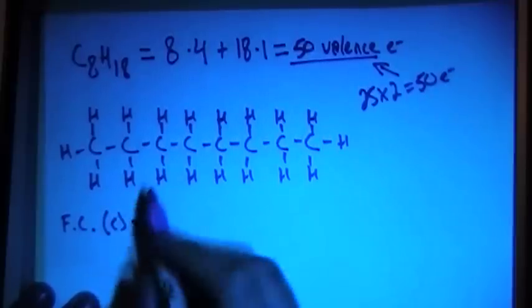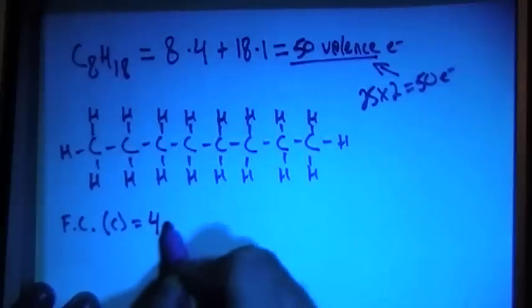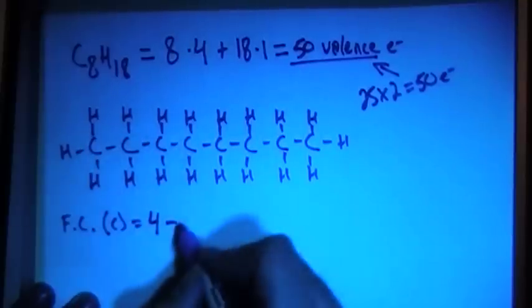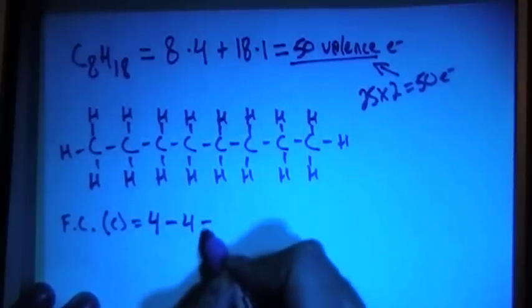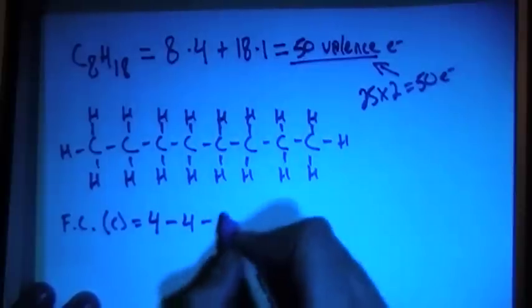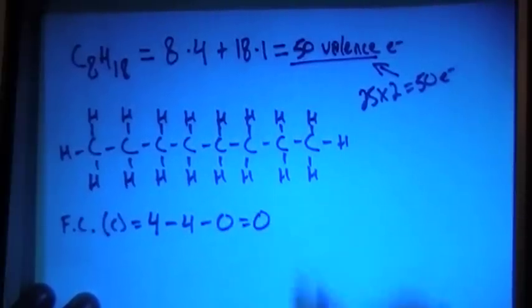So, formal charge is number of valence brought in, which is 4, minus number of bonds, 1, 2, 3, 4, minus number of non-bonding electrons, and there's none of those, so that's 0. And that gives us a formal charge of 0 overall.